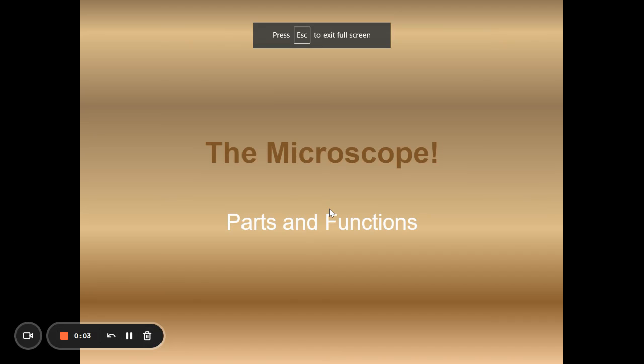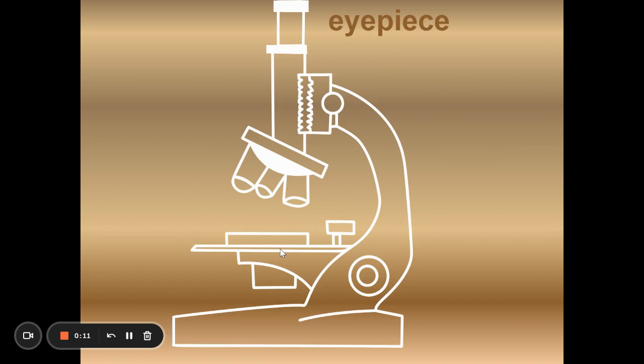So, the microscope. We are going to label the parts of the microscope and add in any functions. The microscopes that we use are called compound light microscopes.